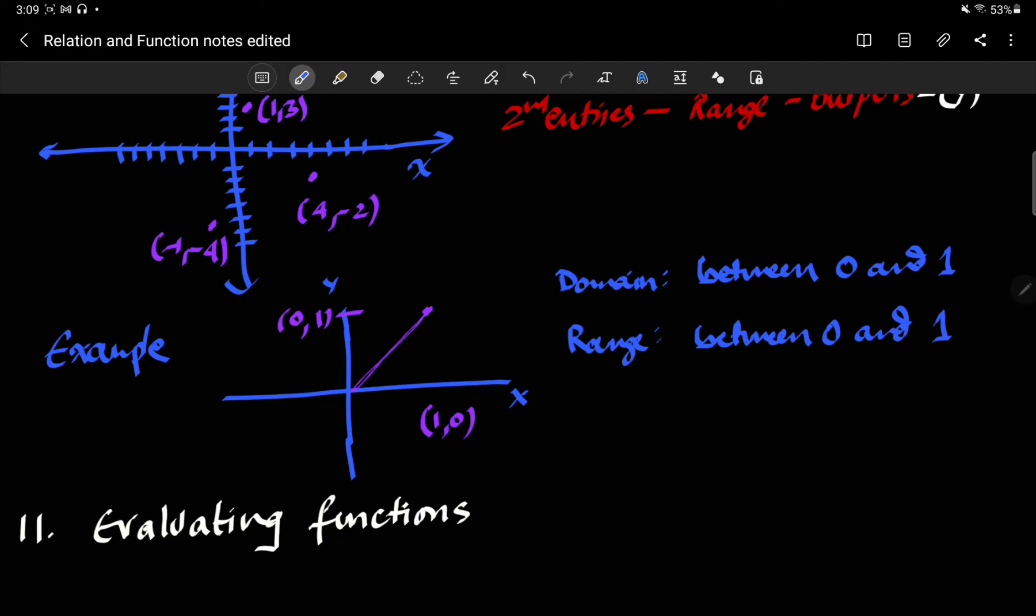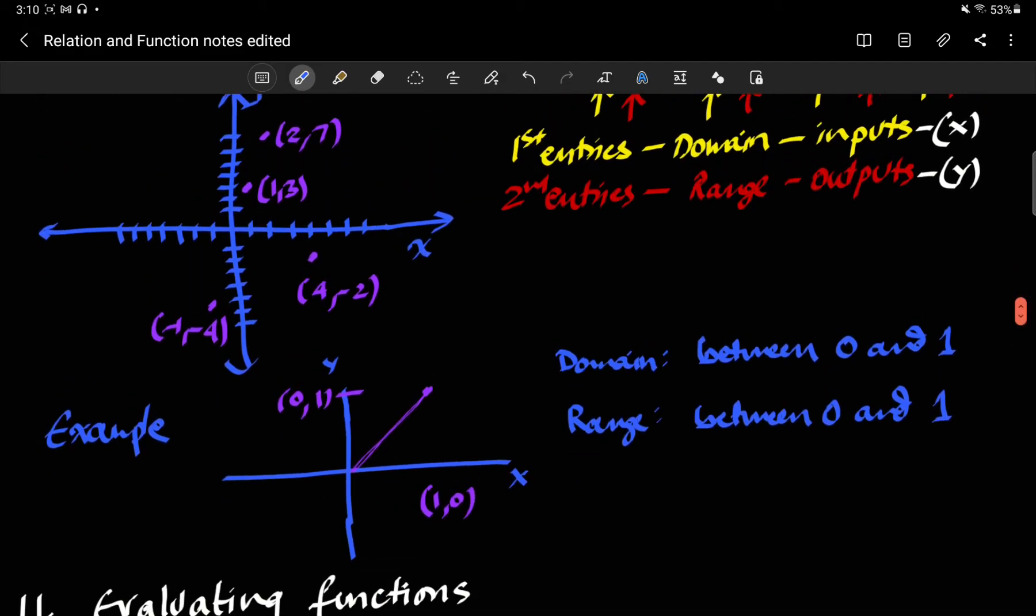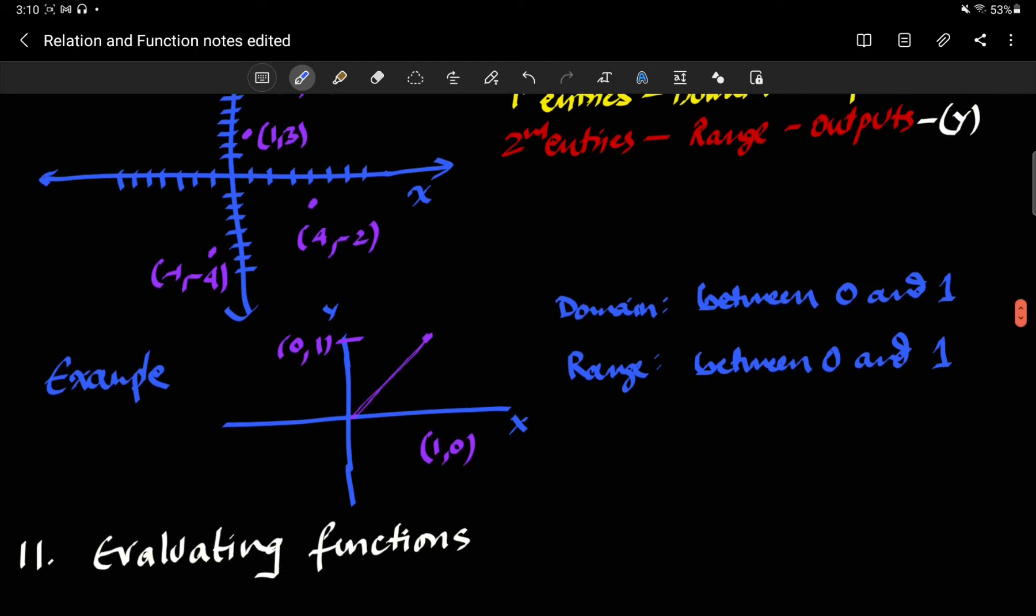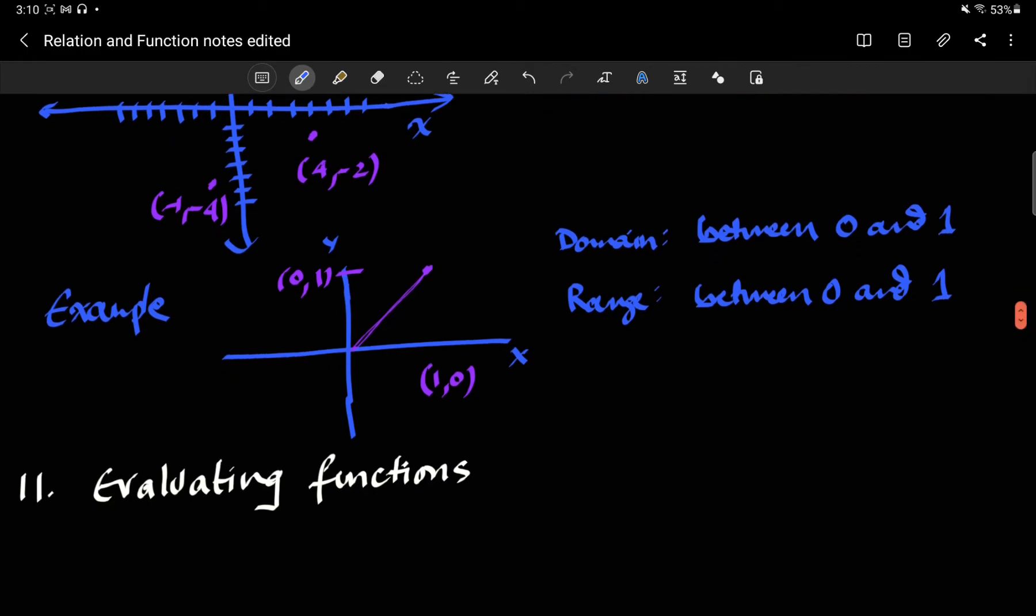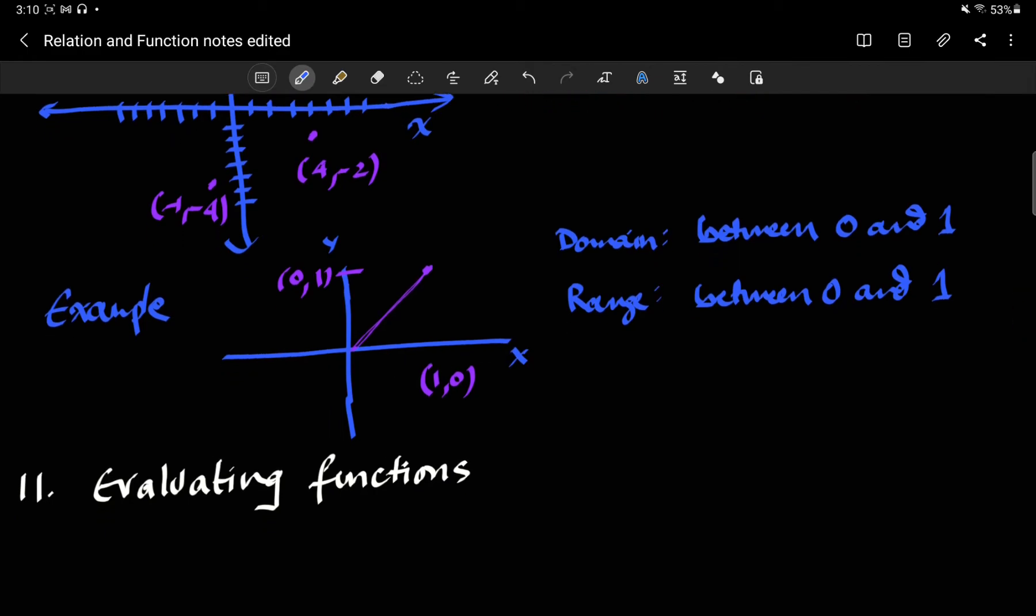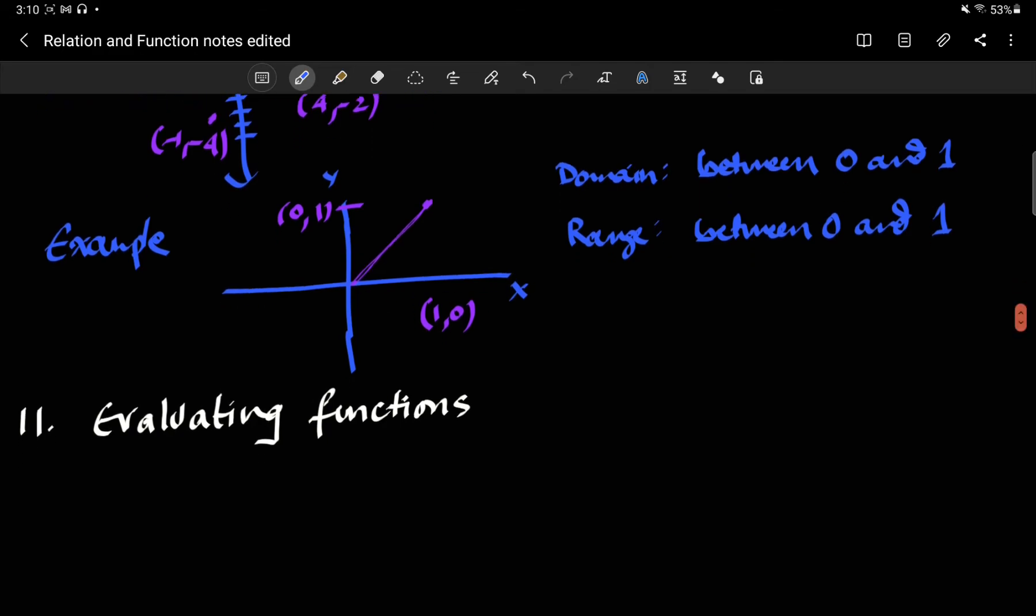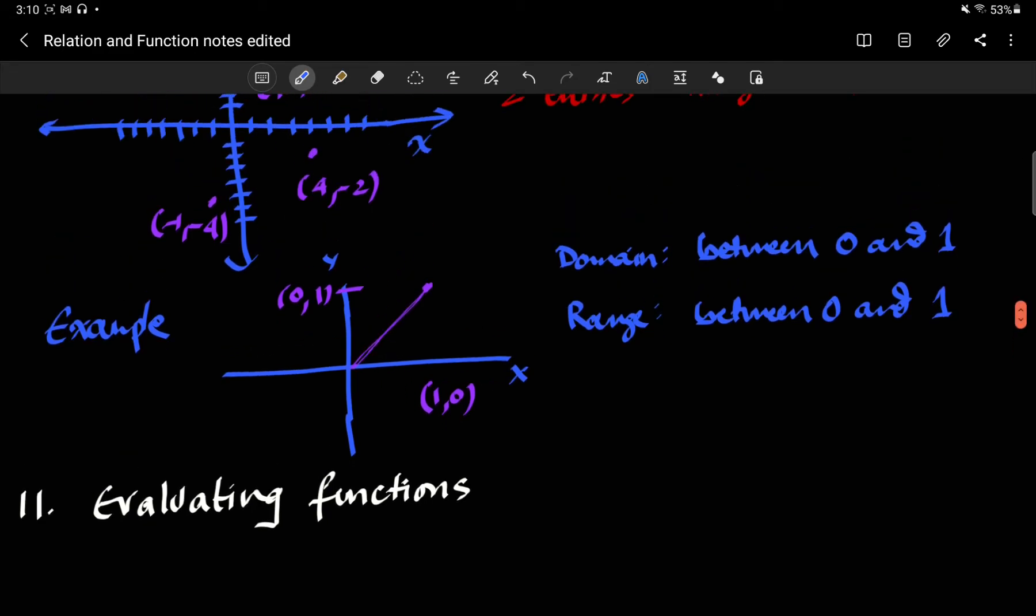Now over here we actually made a pretty big jump at a theoretical level. The jump that we made is from earlier we just had finite number of points, but here now we have infinitely many pairs. This example is just to illustrate that going in the reverse direction, you can just read graphs and tell things about domains and ranges.